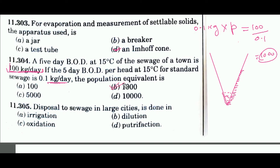Question 305 asks about sewage disposal in large cities. Without transport, we cannot receive food or water. Dilution is a disposal method which can be used in large cities, so the answer will be option B.